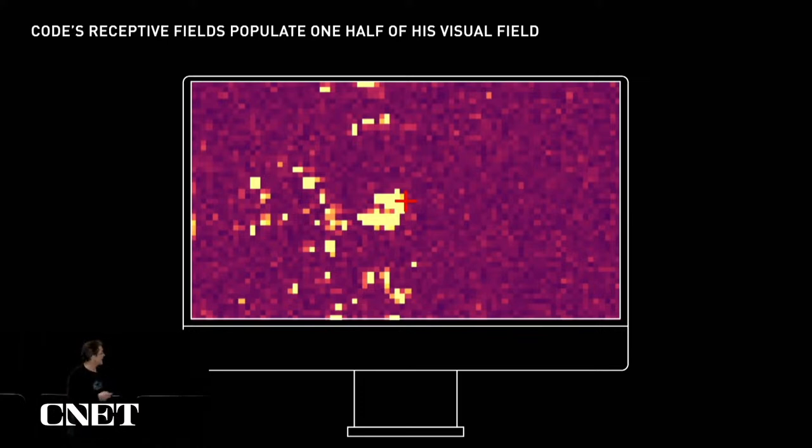Many of the receptive fields are close to the fovea, close to the fixation point. And that's partly due to the magnification that I talked about of the fovea. But there's also a scattering of fields in the periphery. These are from recording sites deeper in the brain, in the calcarine sulcus.